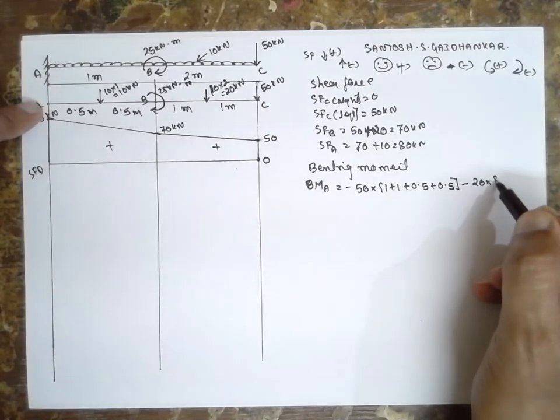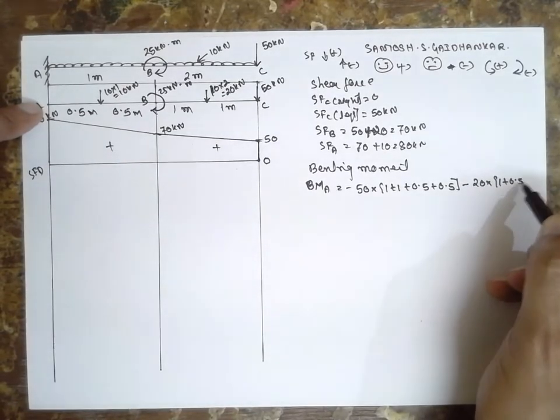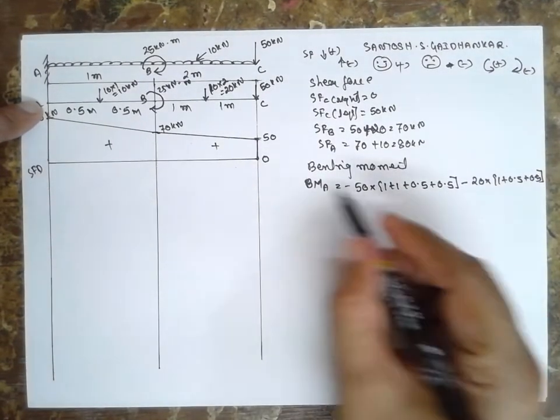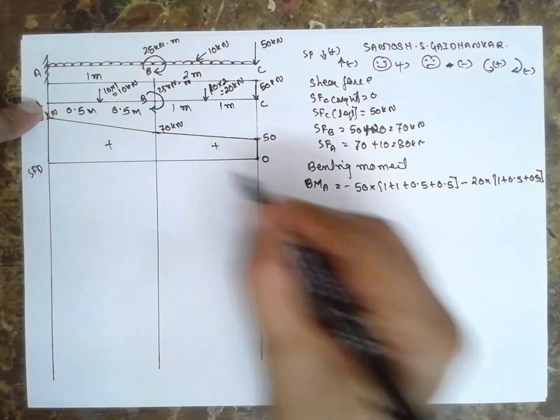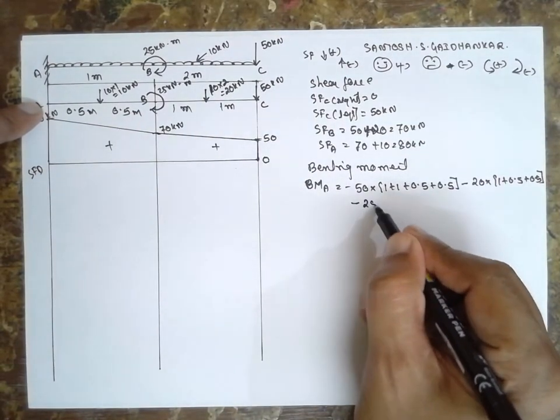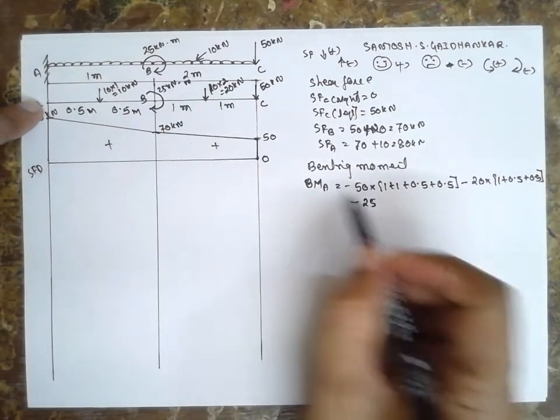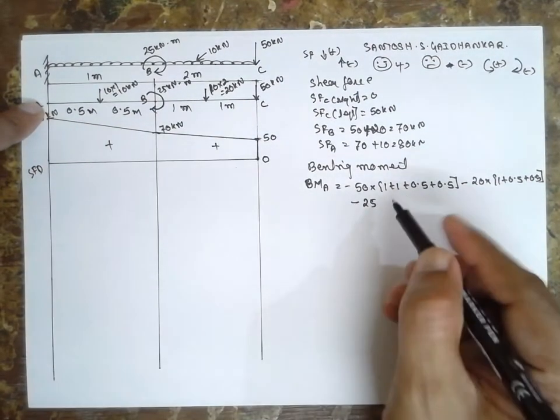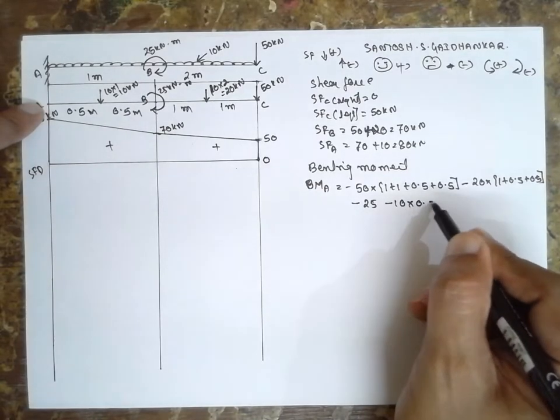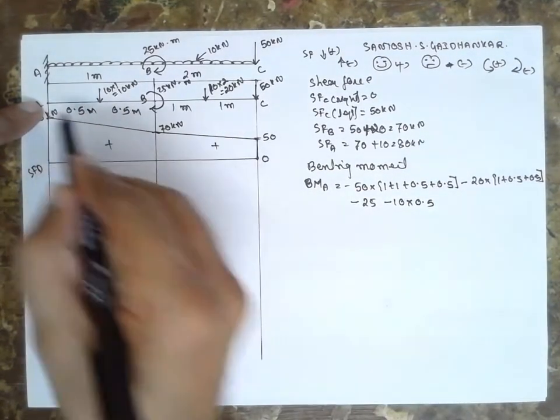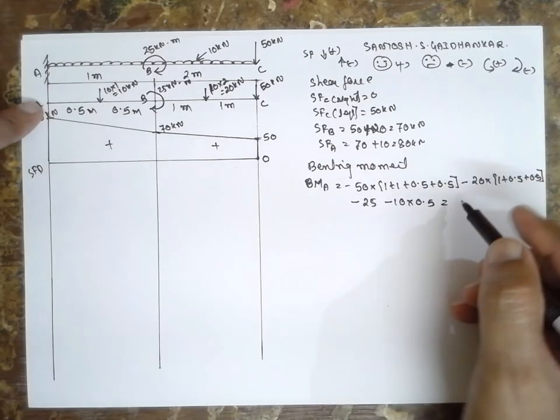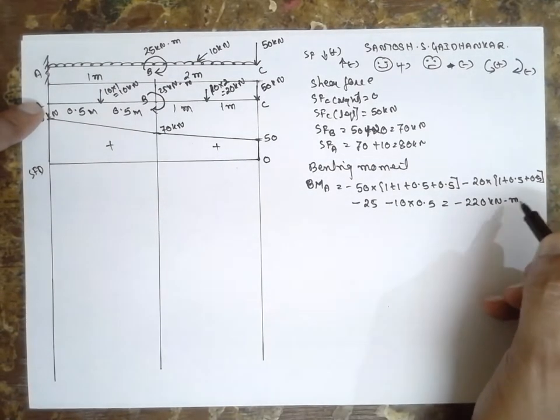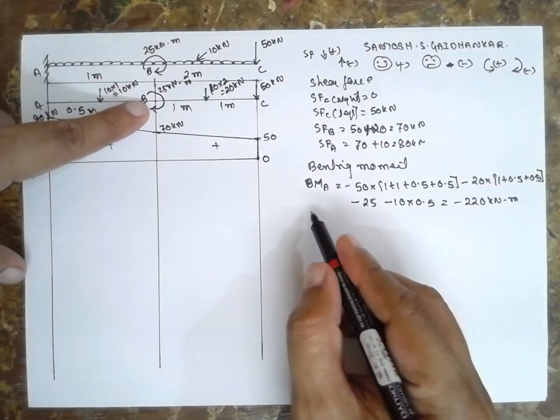Minus 10 into 0.5, the answer is minus 220 kilonewton meter.